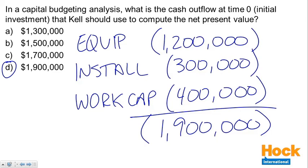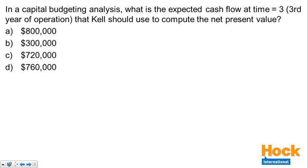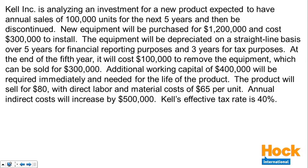That's year zero. For the next question, using all the same information: in a capital budgeting analysis, what is the expected cash flow at time equals three — the third year of operations — that KEL should use to compute the net present value? We have a couple of things: operations and selling, our depreciation tax shield, and those indirect costs.